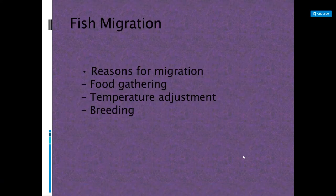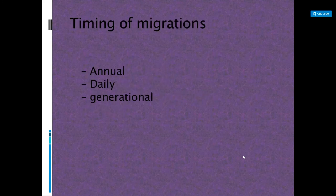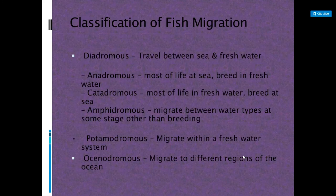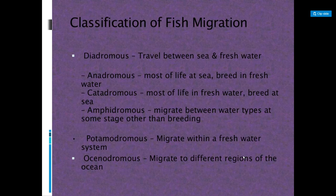Fish migration occurs for food gathering, temperature adjustment, and breeding — occurring annually, daily, or generationally. Diadromous fish travel between sea and freshwater. Anadromous fish spend most of their life at sea but breed in freshwater, like salmon. Catadromous fish spend most of their time in freshwater but breed at sea. Amphidromous fish migrate between water types at stages other than breeding. Potamodromous fish migrate within a freshwater system, and oceanodromous fish migrate to different regions of the ocean.